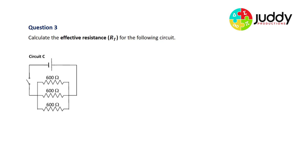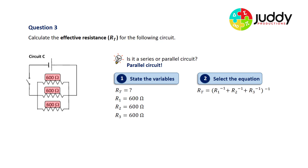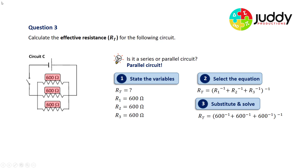Question three: calculate the effective resistance RT for the following circuit. Here we have three branches in parallel, each of value 600 ohms. Since there are three branches, this is a parallel circuit. Stating our variables: RT is the unknown; R1, R2, and R3 are each 600 ohms. Using the parallel equation and substituting in the 600s, we get a total or effective resistance of 200 ohms. The effective resistance RT for circuit C is 200 ohms.